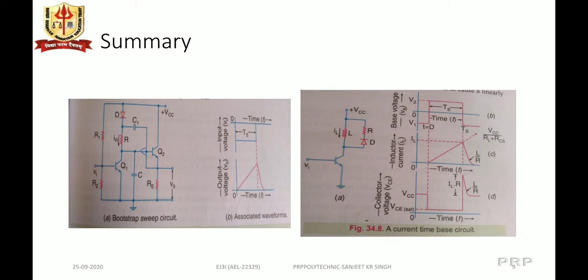When the negative pulse is removed at the base of the first transistor, capacitor C discharges through Q1. The charging and discharging of capacitor C at the base of the second transistor constitutes the output, which is coupled back to the first transistor's collector.